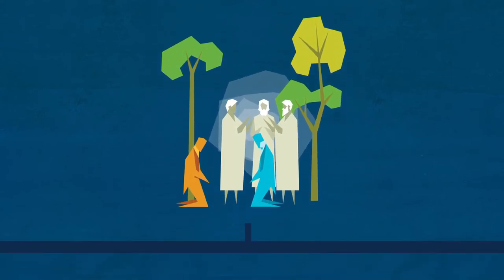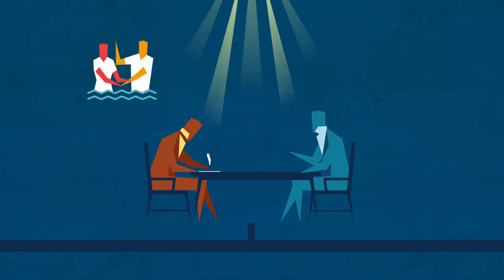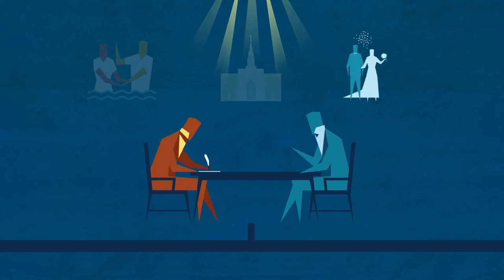The Lord also sent Peter, James, and John to restore his priesthood. That is, the authority to act in the name of God. Joseph Smith also received revelations from the Lord that taught and clarified eternal principles, such as the importance of baptism, the need for temples where we make sacred covenants with God, and that marriage performed by the restored priesthood can last eternally, not just until the end of our mortal life.